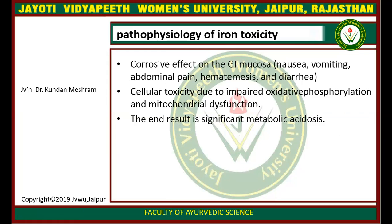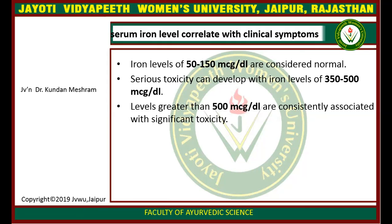Pathophysiology of iron toxicity: the corrosive effect on the gastrointestinal mucosa leads to symptoms of nausea, abdominal pain, vomiting, and diarrhea. Systemic toxicity is due to impaired oxidative phosphorylation and mitochondrial dysfunction, with the end result being significant metabolic acidosis. Serum iron levels correlate with clinical symptoms: levels of 50 to 150 micrograms per dL are considered normal; serious toxicity can develop with levels of 350 to 500 micrograms per dL; and levels greater than 500 micrograms per dL are consistently associated with significant problems.